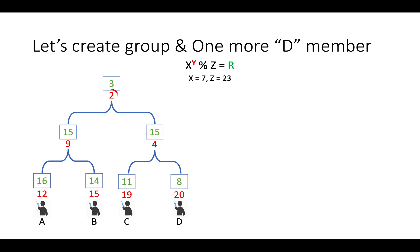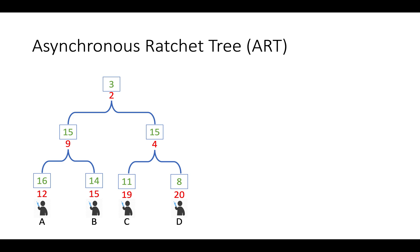Here you can see common key 2 that will be used by all members to encrypt and decrypt message. So, what does this structure look like? This is called asynchronous ratchet tree. Now, you can guess why it is called ratchet tree.